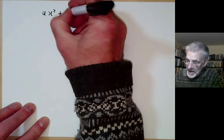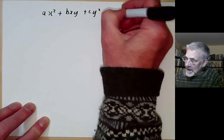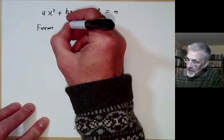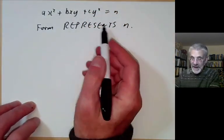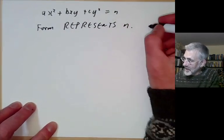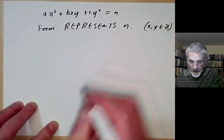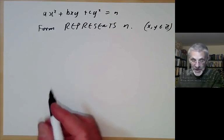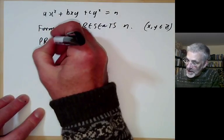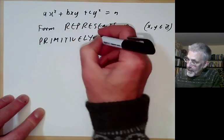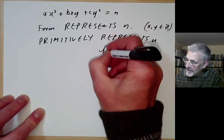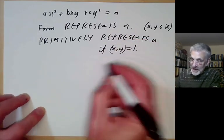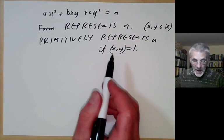We say the form ax squared plus bxy plus cy squared represents n if n equals the form for some integer values of x and y. We say it primitively represents n if additionally x and y are co-prime. We'll see in a few minutes why we need this condition.